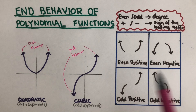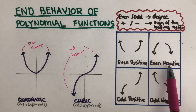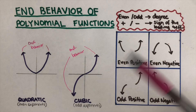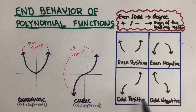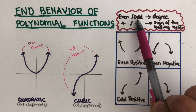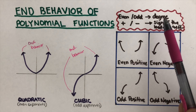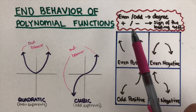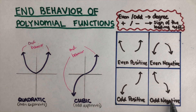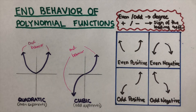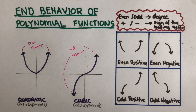There are four possible combinations of end behavior: even positive, even negative, odd positive, and odd negative. Even and odd refer to the degree — remember, the degree is the highest exponent in a polynomial. Positive and negative refer to the sign of the leading coefficient. Let's look at an example to better understand these types of end behavior.